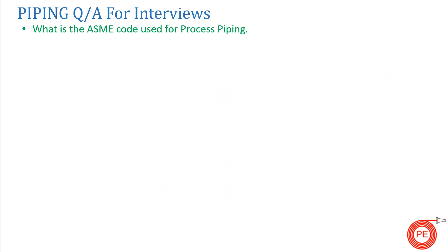The first question is: what is the ASME code used for process piping? The code referred for process piping is ASME B31.3. And if someone asks what is the code for power piping, the answer is ASME B31.1. Be very clear on this question because it is the most common question asked in any piping-related job interview.